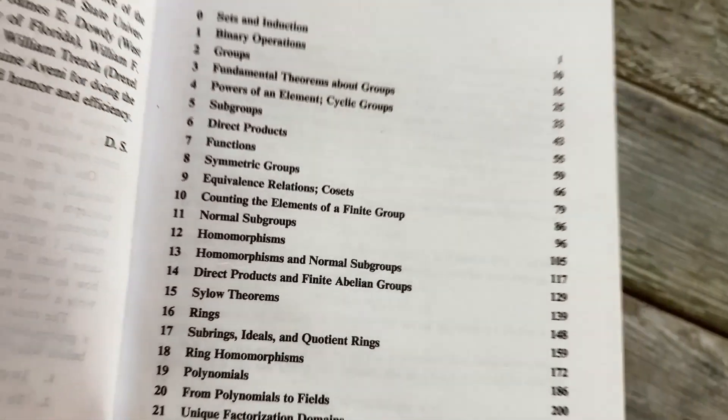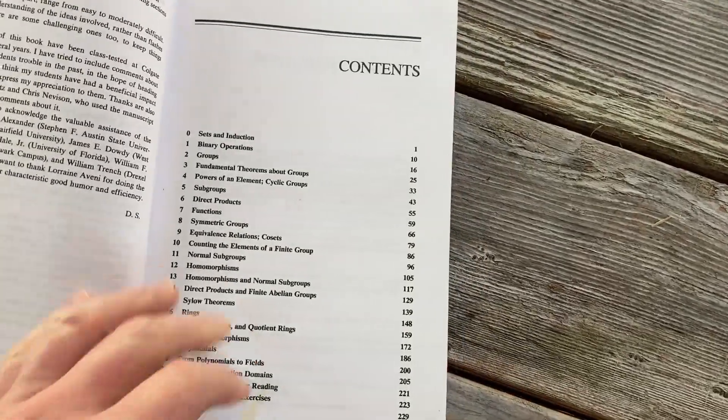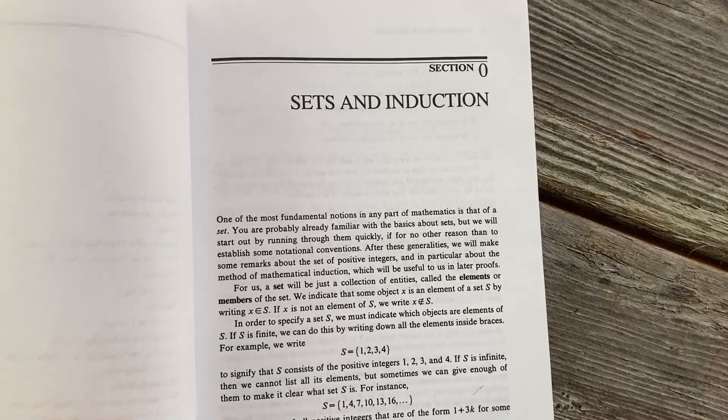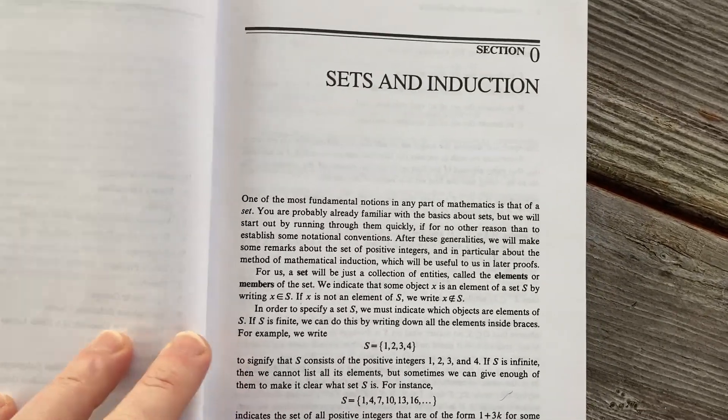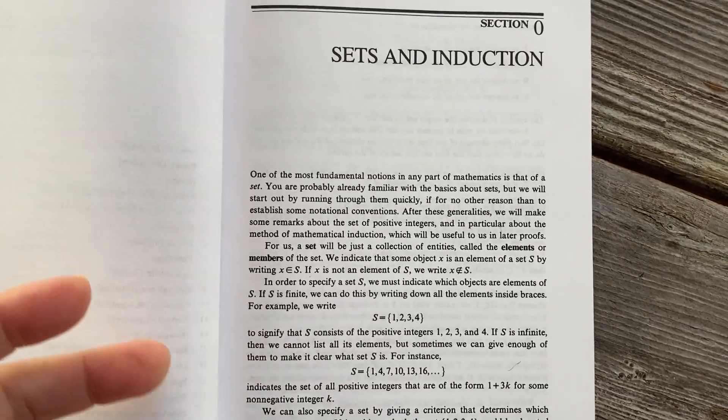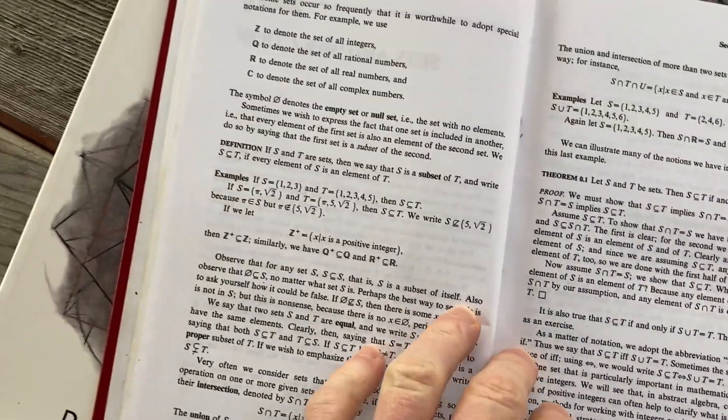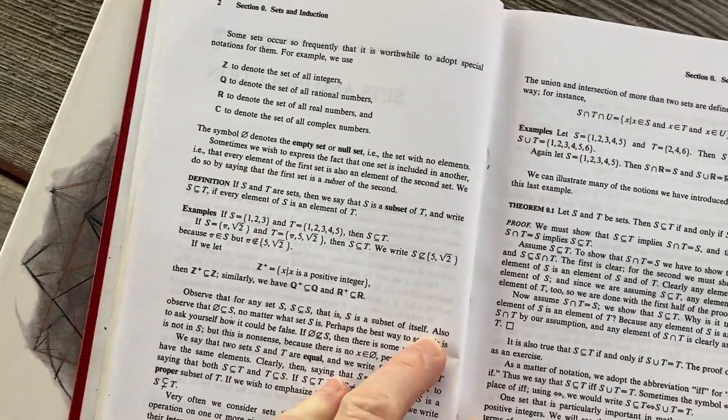But it is the easiest book to read, in my opinion, when it comes to learning abstract algebra. Section zero is on sets and induction. This is like a review section for most people. You've probably seen sets.